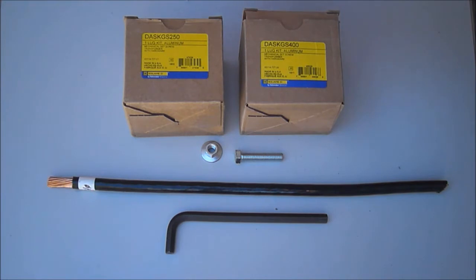The G in the catalog number indicates that the DASKGS kits also contain a ground lug to attach to the enclosure bottom pan for enclosure grounding purposes. When we unpack the kits,